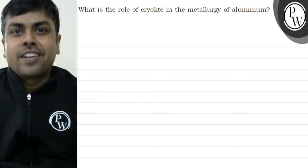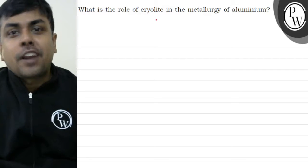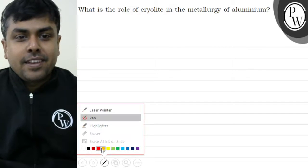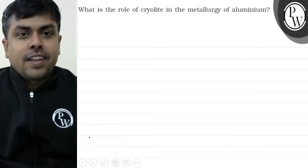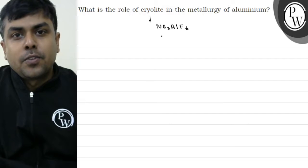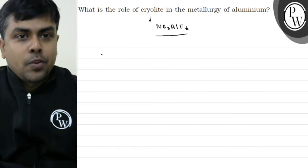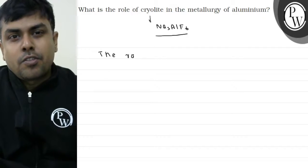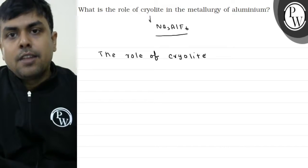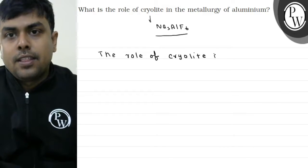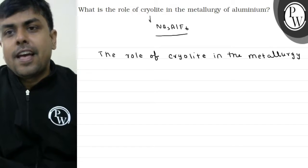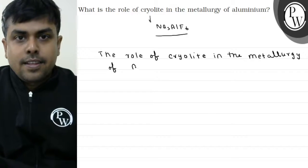Hello bachho, let's read the question. The question says: what is the role of cryolite in the metallurgy of aluminium? Cryolite, bachho, hota kya hai — NA3ALF6. Right, cryolite is NA3ALF6. Now the basic purpose, the basic role of cryolite in the metallurgy of aluminium is as follows.